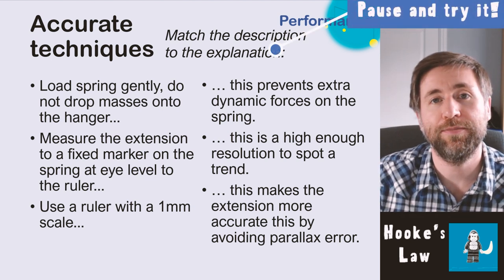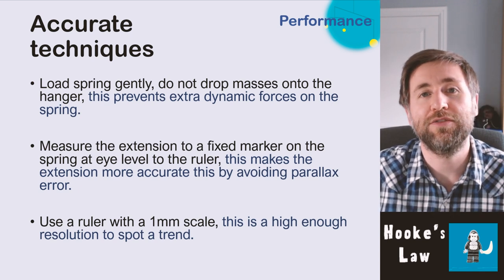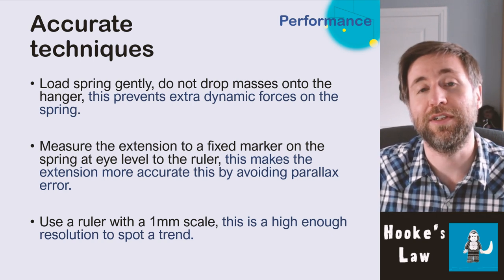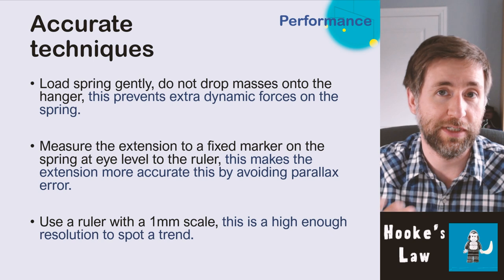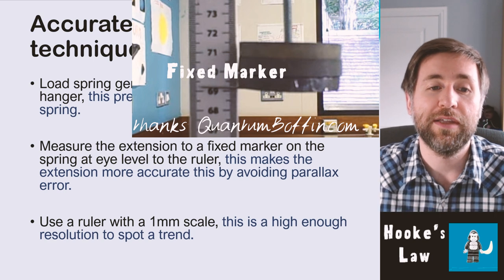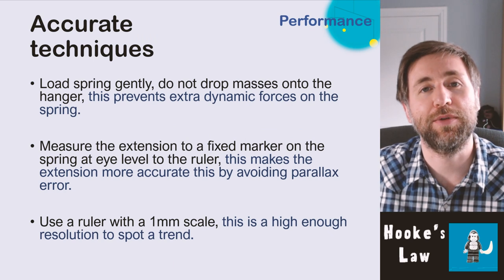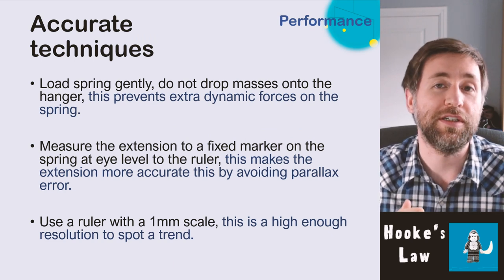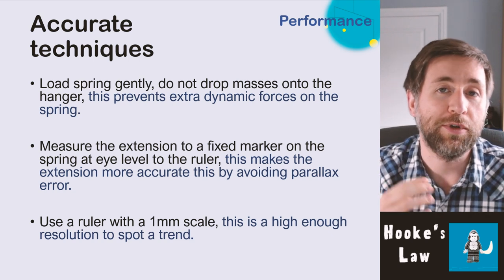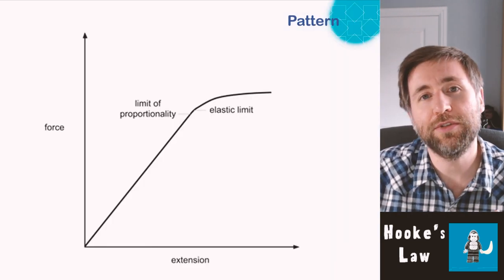Here's a matching activity: match the technique description to the explanation of why it's more accurate. Load the spring gently — don't drop masses onto the hanger — this prevents extra dynamic loads so you get a true weight force rather than a dynamic deceleration force. Measure extension using a fixed marker on the spring and get down to eye level with the ruler — this avoids parallax error. Use a ruler with a one-millimetre scale, because this resolution is high enough to spot a trend.